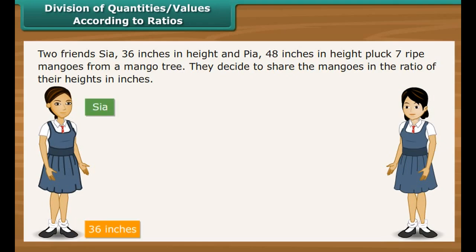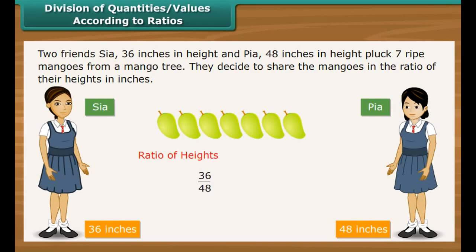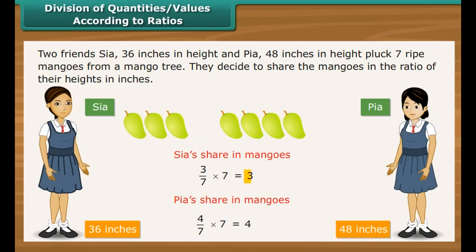Two friends, Sia at 36 inches in height and Pia at 48 inches in height, pluck 7 ripe mangoes from a mango tree. They decide to share the mangoes in the ratio of their heights. The ratio of their heights is 3 is to 4. It means that out of every 7 mangoes, 3 will be eaten by Sia and 4 by Pia.